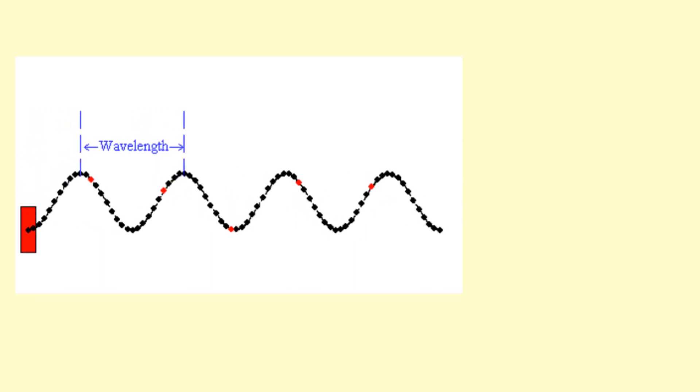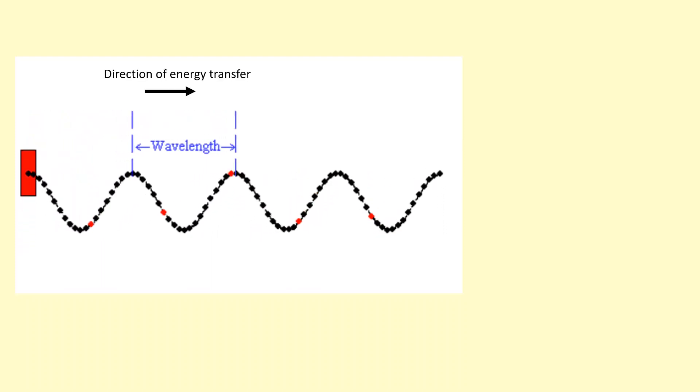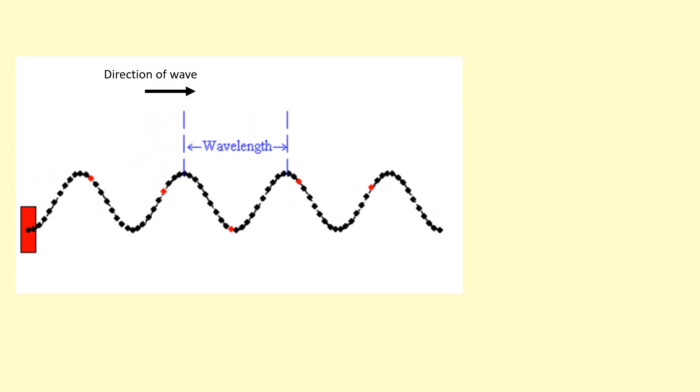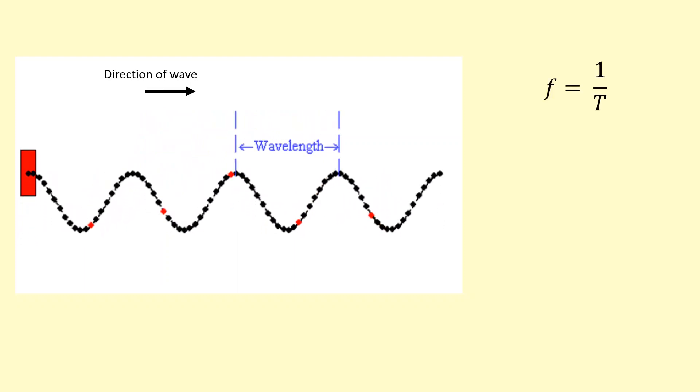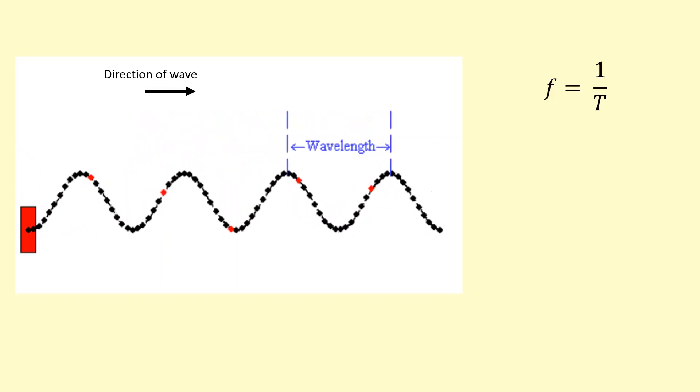You can see this wave is going towards the right, so that's the direction of energy transfer and the direction the wave is traveling in. Other than the f equals 1 over t formula, another very useful